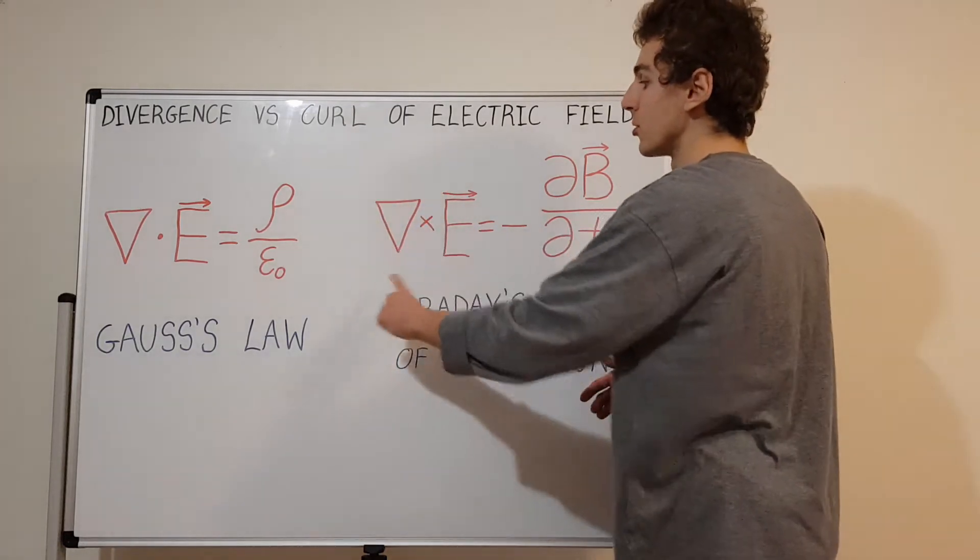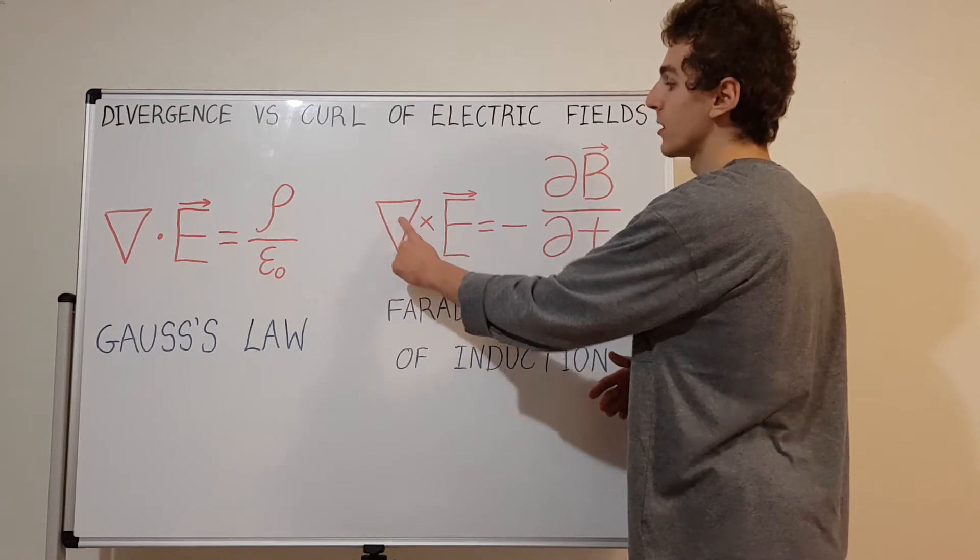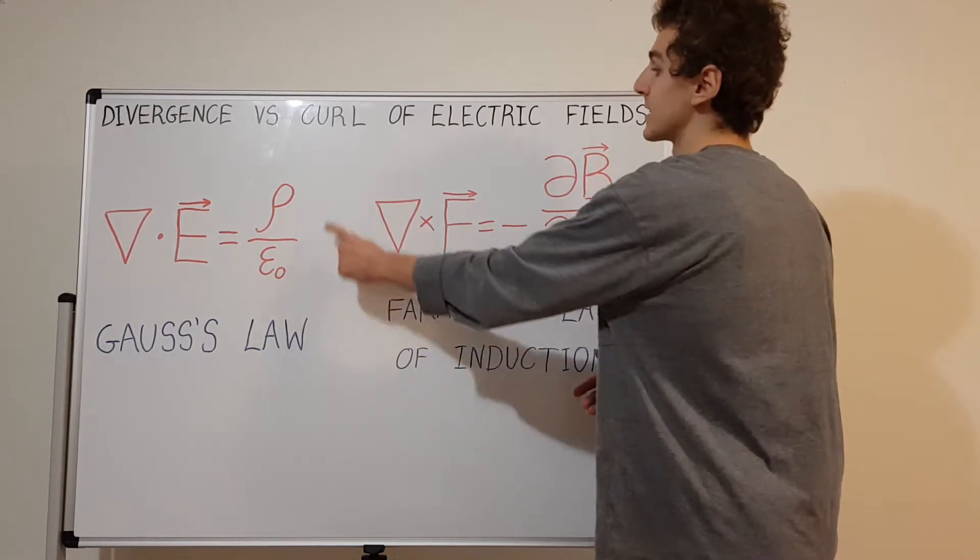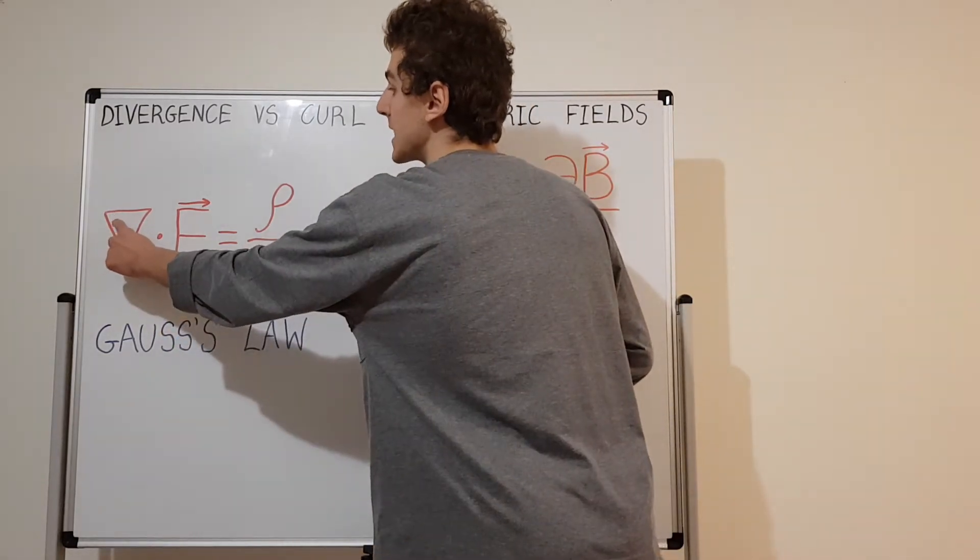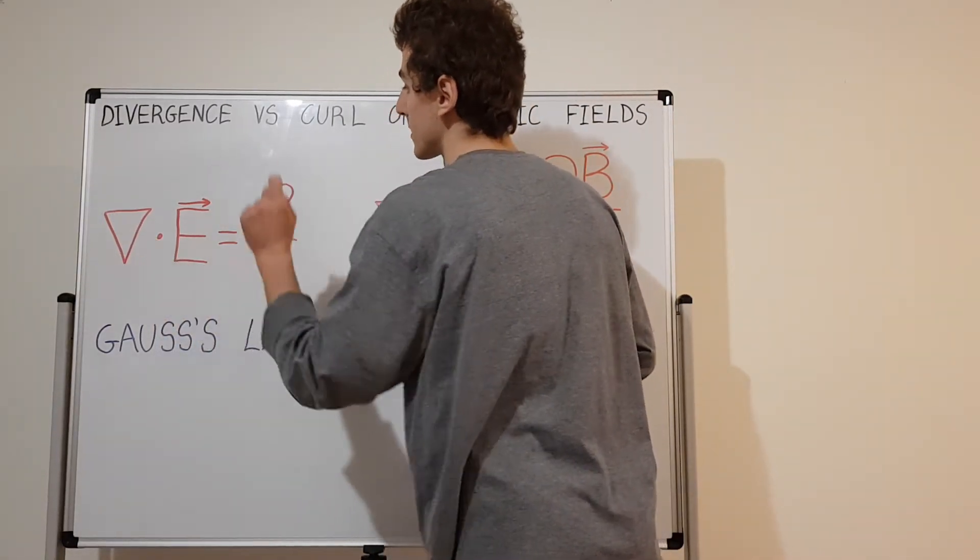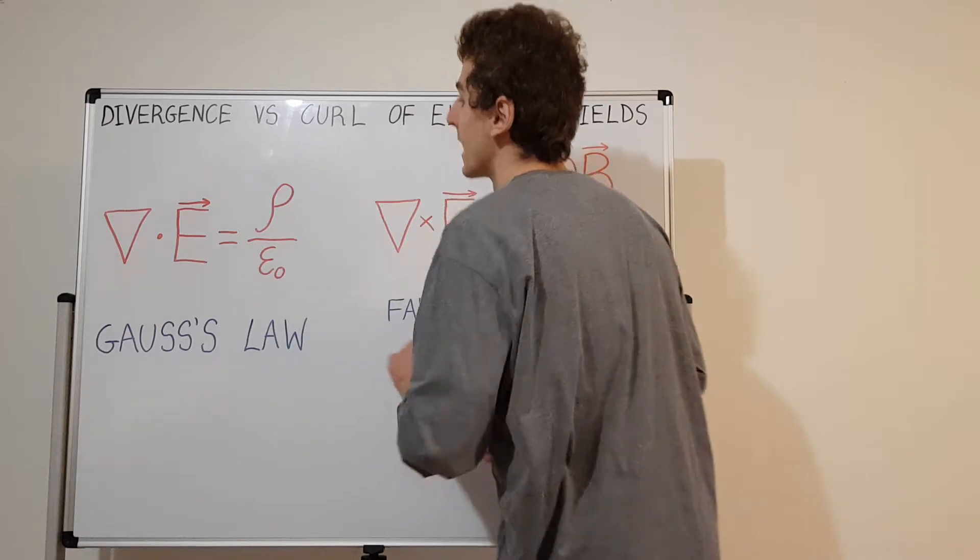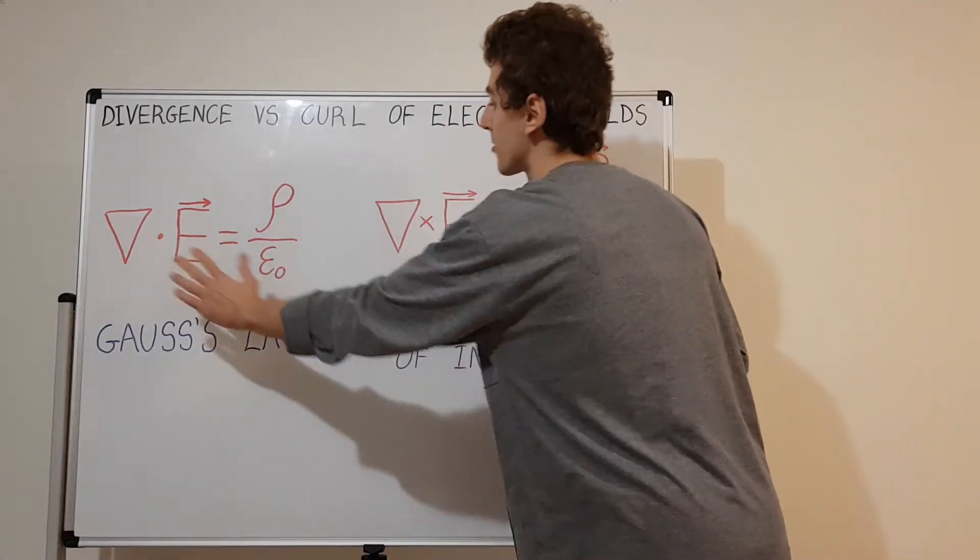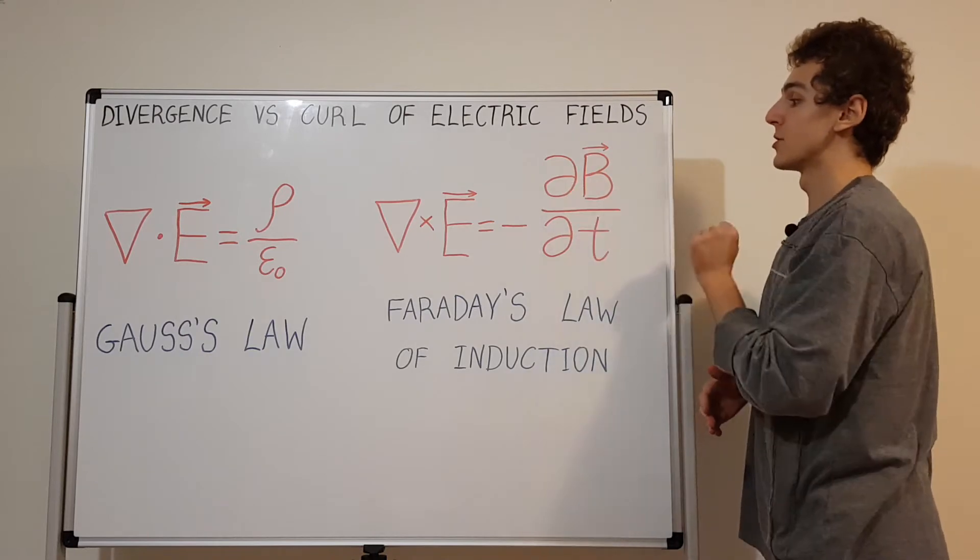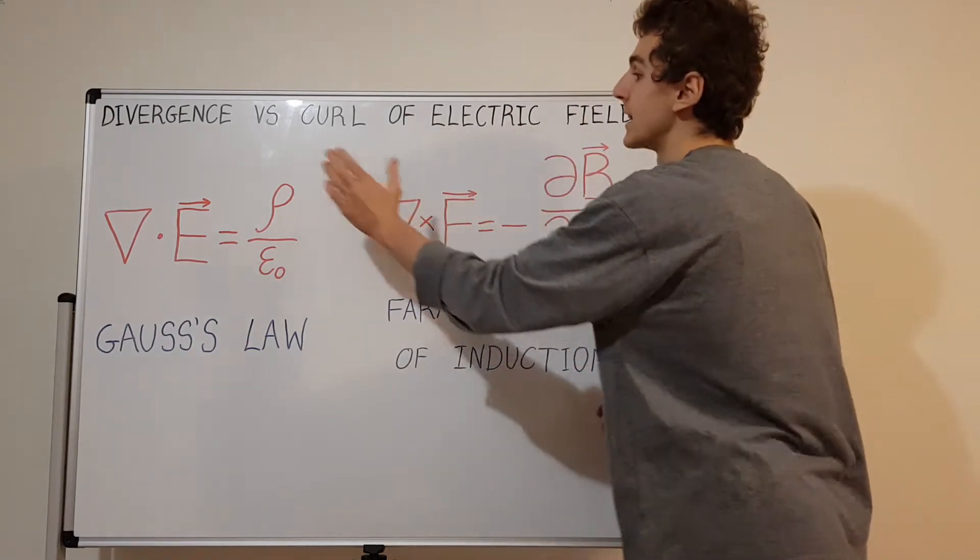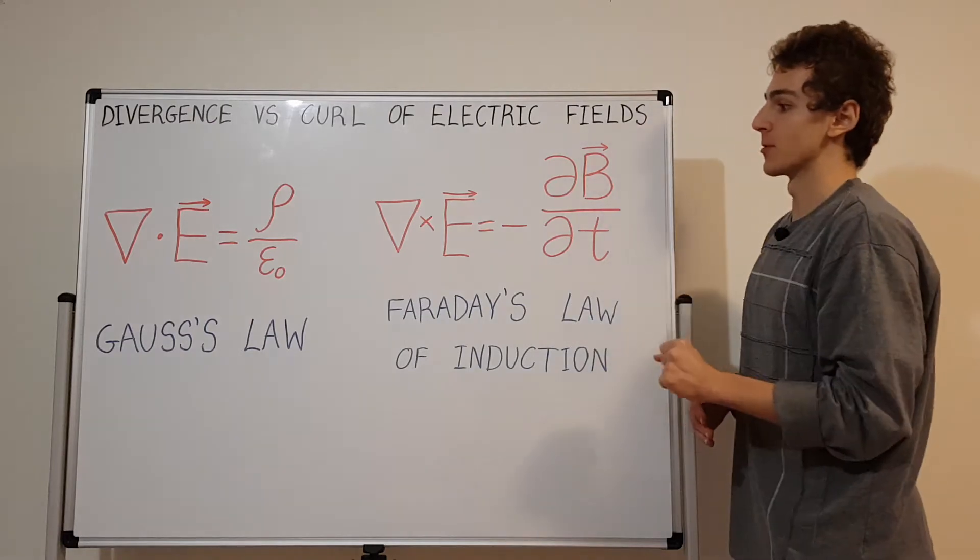Here we have curl, you can see it's the del operator and we're taking the cross product, so that's curl. This is divergence because we're taking the del operator and the dot product. This is all about electric fields, so there's no magnetic fields except in this term, but we're just talking about the curl and the divergence of electric fields.